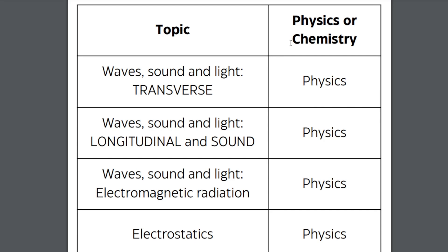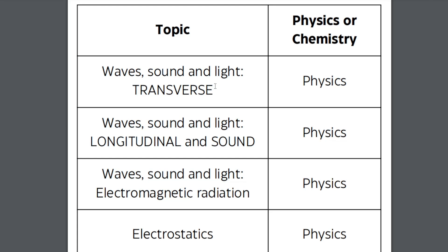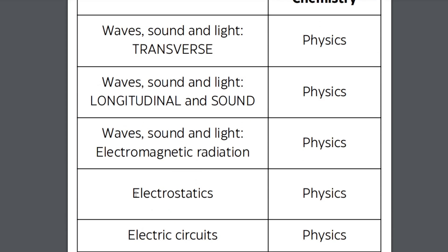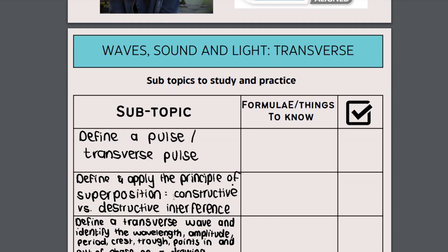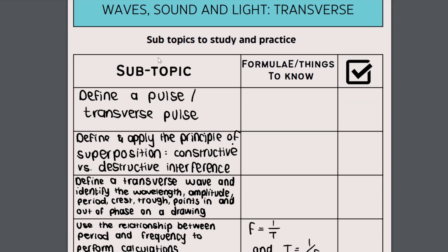Chemistry according to the ATPs will come in during term two. Our first topic for term one is waves, sound and light. This is quite a big topic and I've broken it down into three subsections because there are three different types of waves you're going to learn about: transverse waves, longitudinal waves — and sound waves are longitudinal waves — and electromagnetic radiation. These are all physics topics. Then we've also got electrostatics and electric circuits.